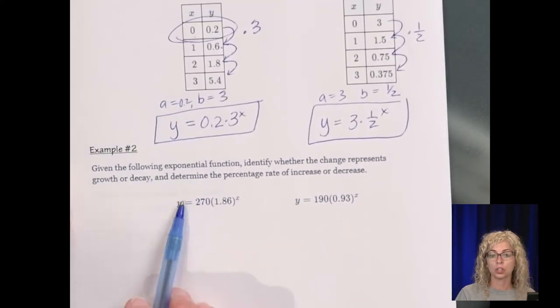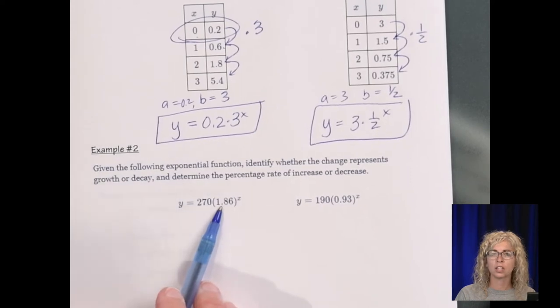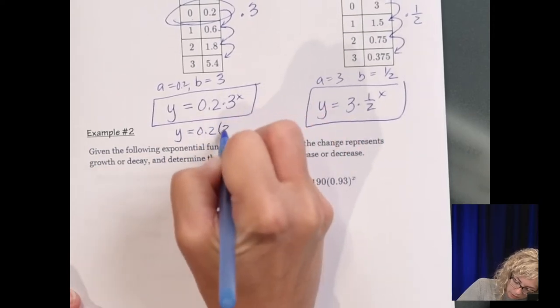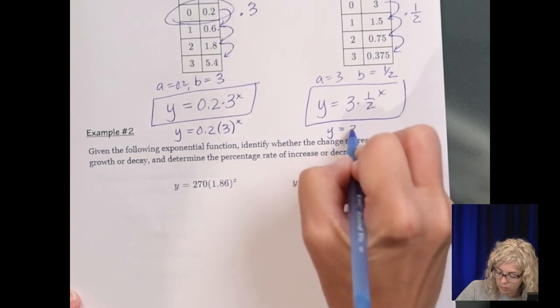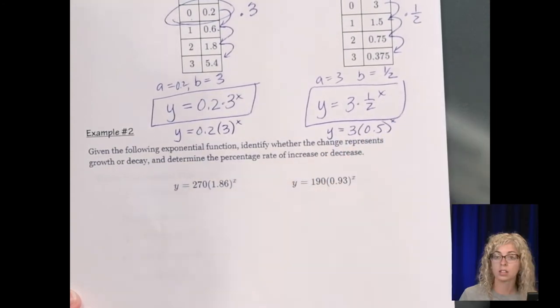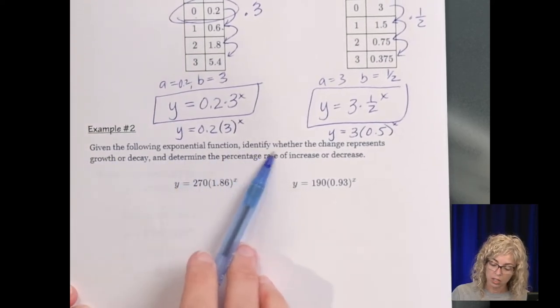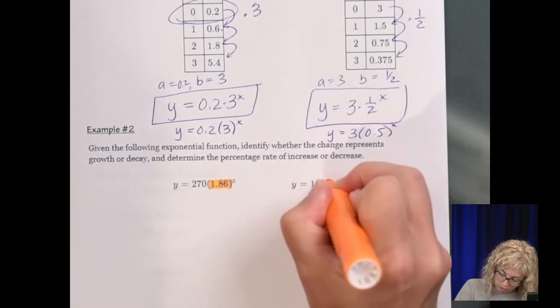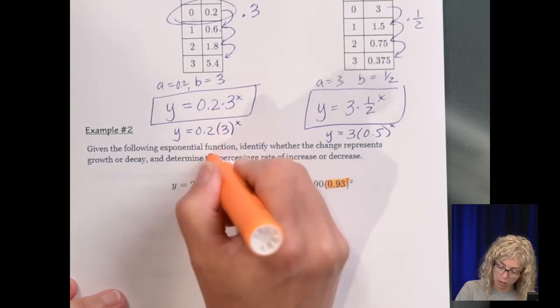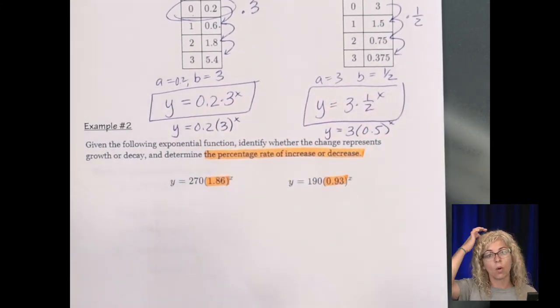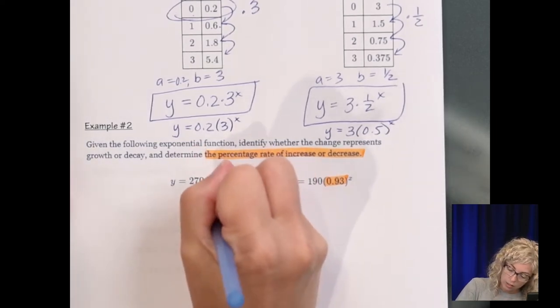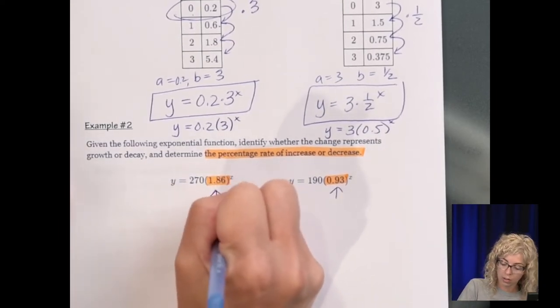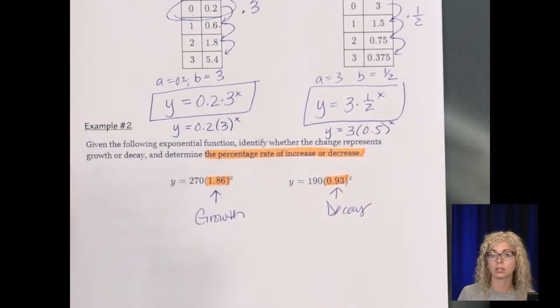Number two. Given the following exponential function. So here is A times B to the X. Just instead of using the dot, they're using the parentheses. So this would be the same thing. I'll even write it as a decimal because that is the same thing as well. Given the following exponential function, identify whether the change represents growth or decay. So we want to look at that factor. So all we're doing is looking at the parentheses. This is greater than 1. This is less than 1. So this is growth. And then this is decay.